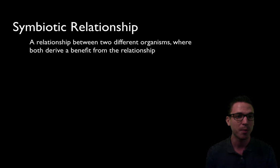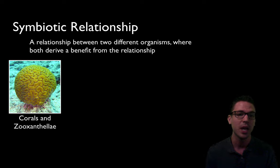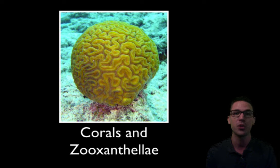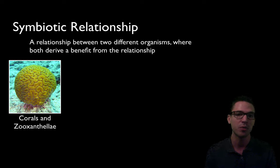You should be able to give examples of symbiotic relationships. One popular example is the relationship between corals and zooxanthellae, which are photosynthetic algae. The zooxanthellae live inside the corals, getting home, protection, and the raw ingredients — carbon dioxide and water from the corals' respiration — that they need to do photosynthesis. In return, the zooxanthellae perform photosynthesis and give the corals oxygen as well as the sugars they produce. Both are benefiting from the relationship.